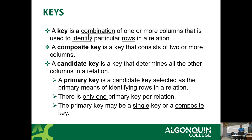A candidate key determines all the other columns in a relation. The candidate key becomes an identifier, which then becomes a primary key. A primary key is a candidate key that's been selected. There is only one primary key per relation — it doesn't mean the primary key can't be made up of multiple columns, but you can only ever have one primary key defined per table.